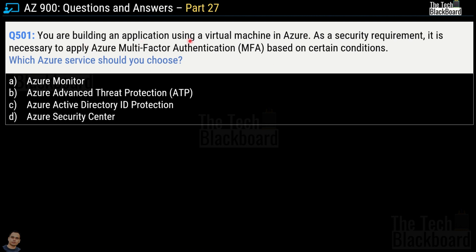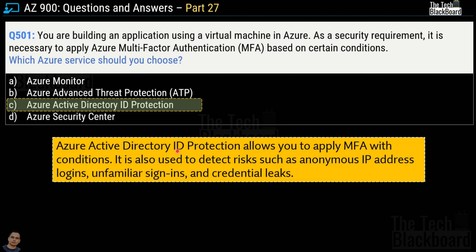Question 501: You are building an application using a virtual machine in Azure and as a security requirement, it is necessary to apply Azure multi-factor authentication based on certain conditions. Which Azure service should you choose? Options are Azure Monitor, Azure Advanced Threat Protection, Azure Active Directory ID Protection, and Azure Security Center. The correct answer is option C, Azure Active Directory ID Protection, because it allows you to apply MFA with conditions and is also used to detect risks such as anonymous IP address logins, unfamiliar sign-ins, and credential leaks.